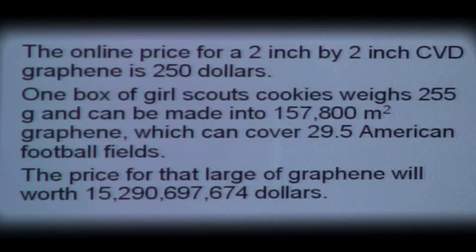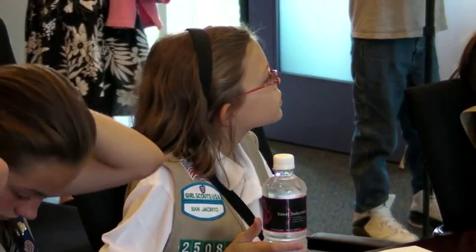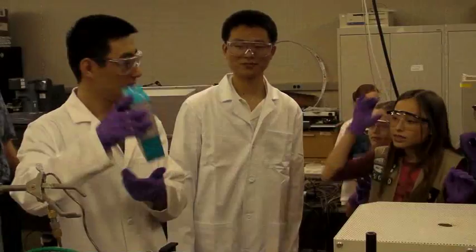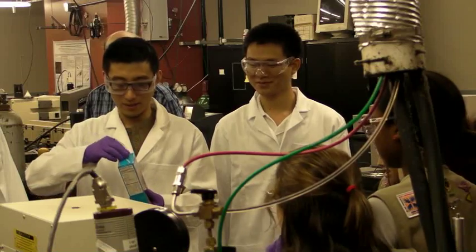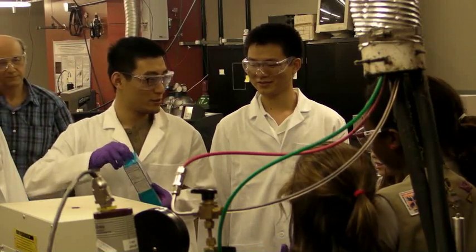One box of Girl Scout cookies — the normal box — covers 29.5 American football fields. Imagine how much graphene you can make. If you cut them into small pieces and sell them, somebody will buy them, and it would be worth more than 15 billion dollars. So we will open the box today and grow graphene from these cookies.